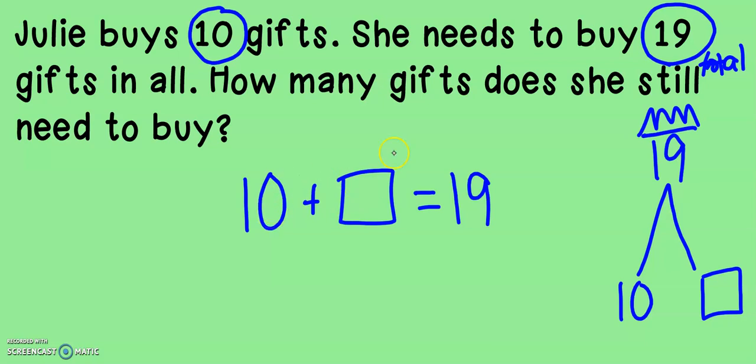I'm going to use that counting up strategy. 10, 11, 12, 13, 14, 15, 16, 17, 18, 19. How many did I need to move up? I had to go up 9 to get 19. That means that Julie needs to buy 9 gifts. Don't forget to add your label. As a second grade mathematician, we always add a label to our story problems. Let's practice two more story problems today.